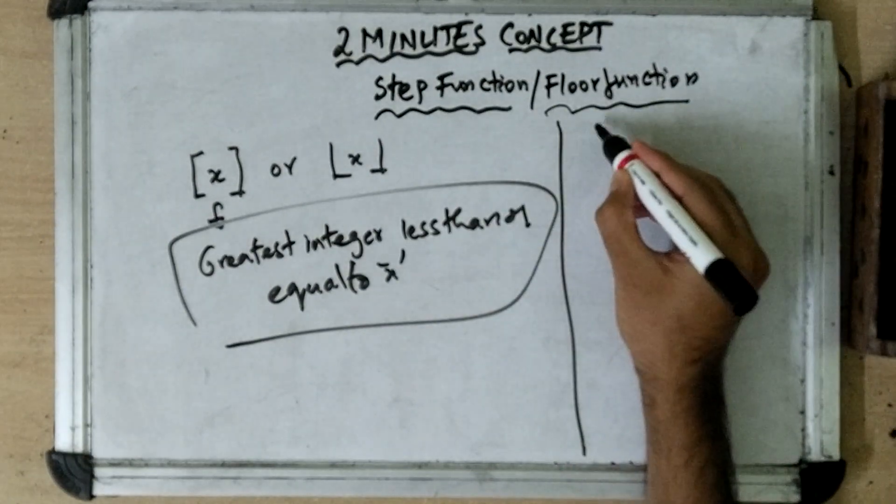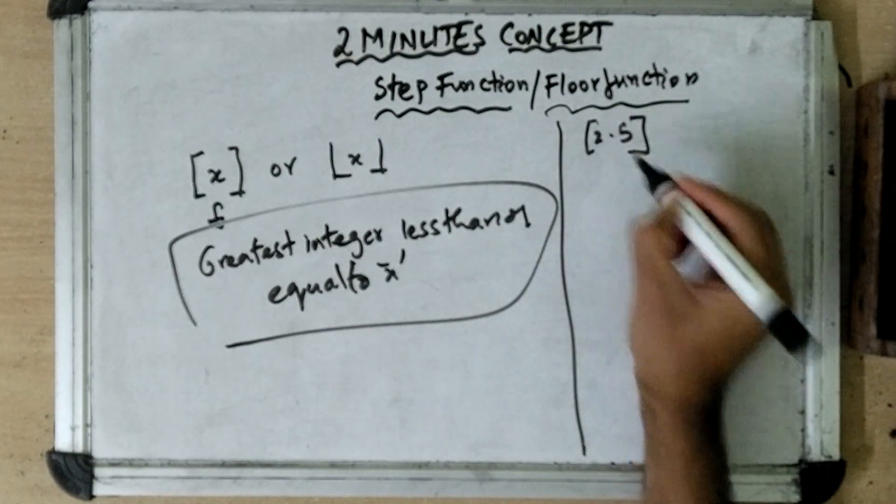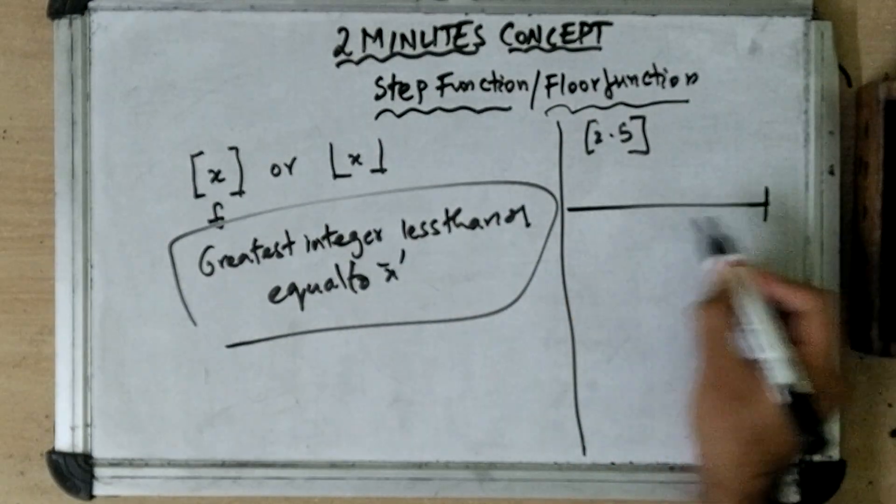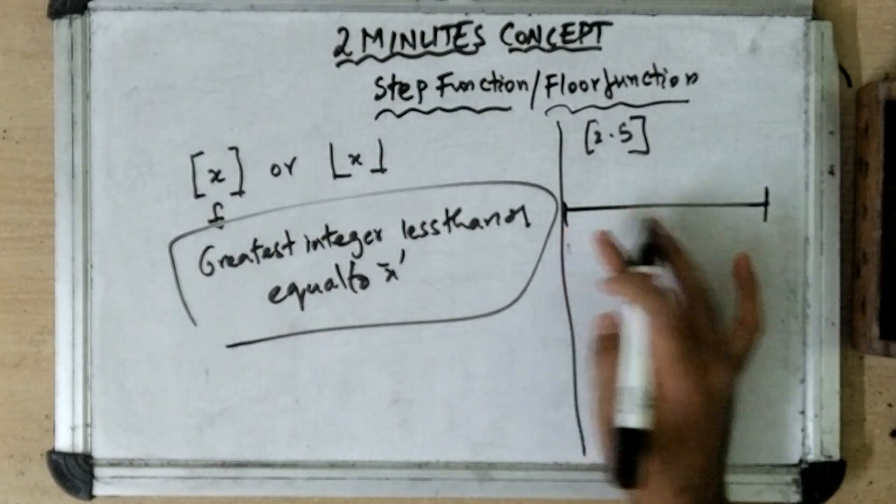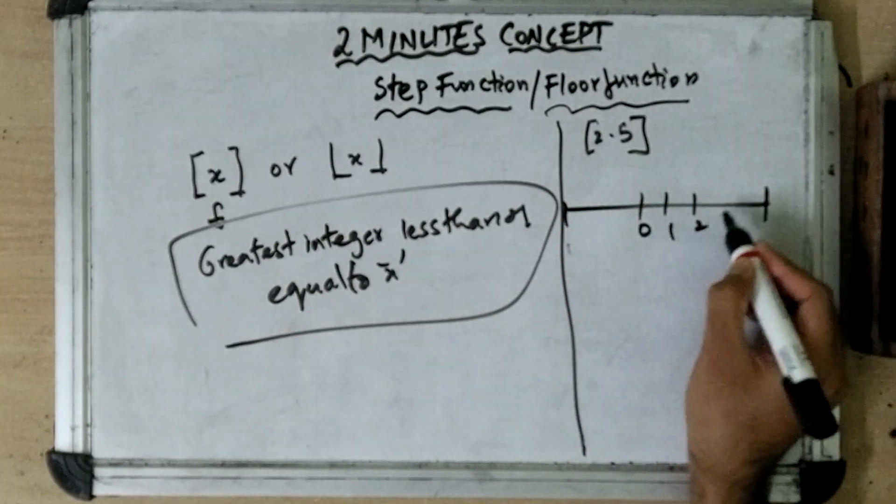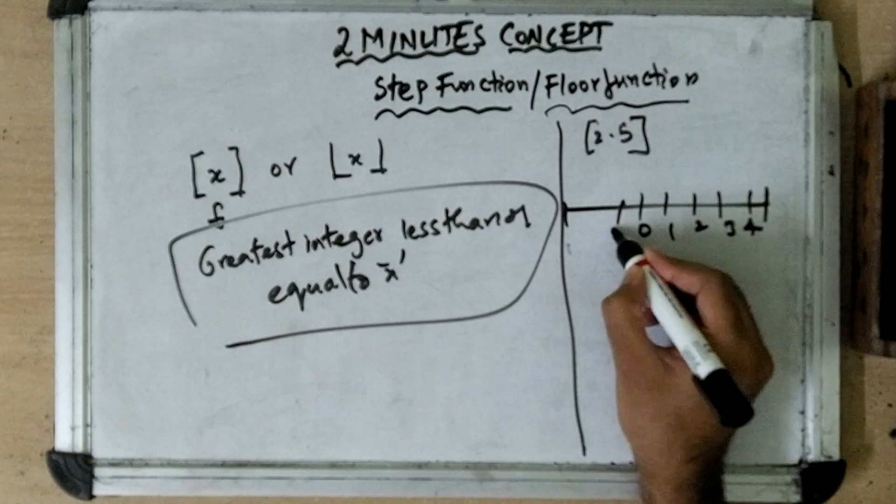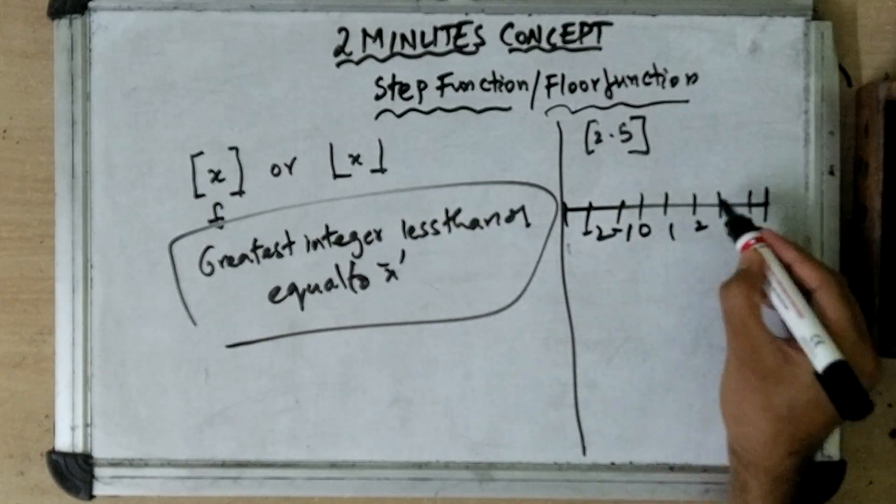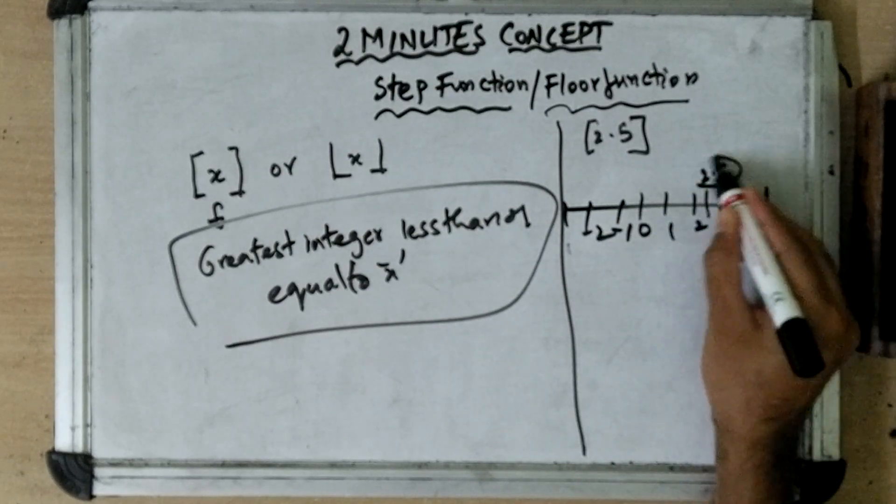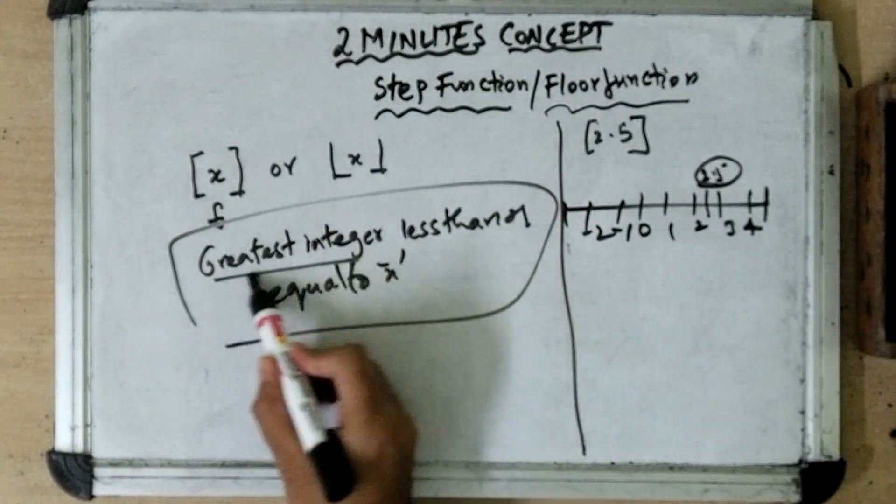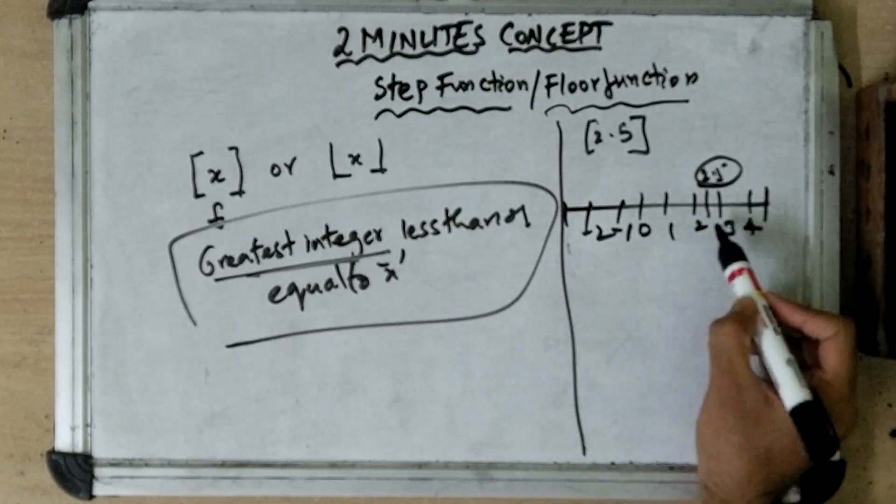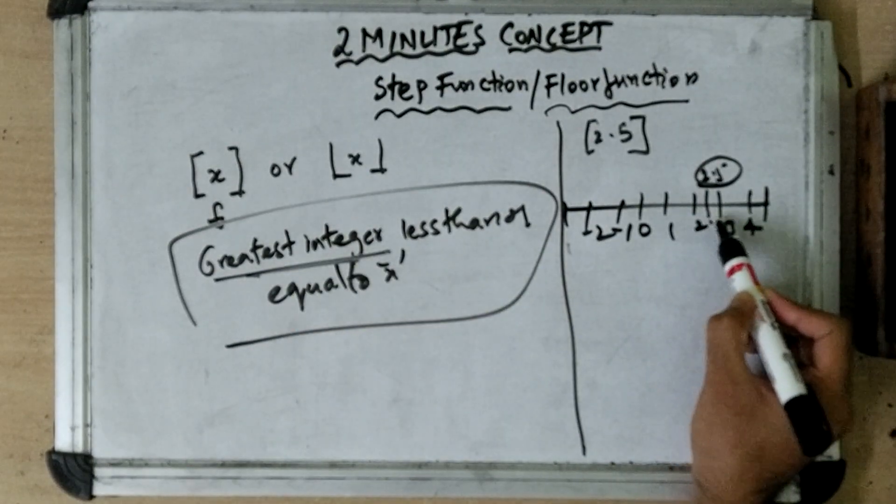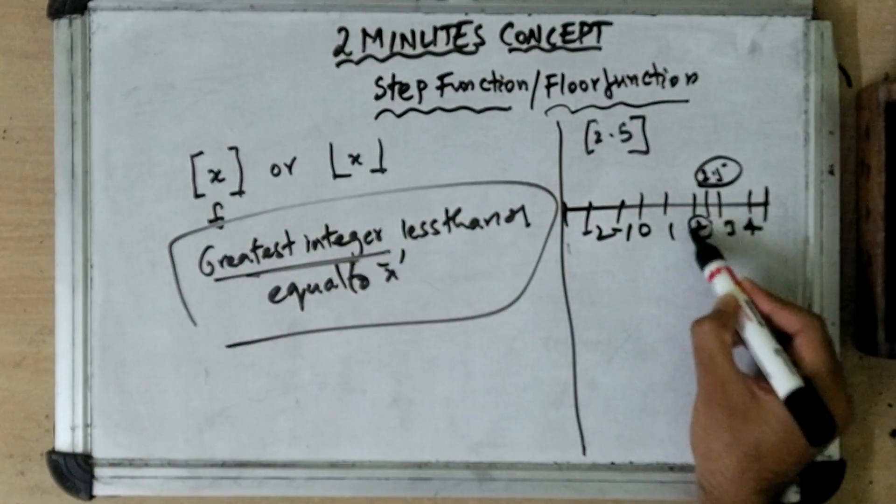Let us discuss it in detail. Suppose you have step of 2.5. If we draw a number line: 0, 1, 2, 3, 4, minus 1, minus 2, and so on. 2.5 will lie somewhere here. The greatest integer less than or equal to - what are all the integers which are less than 2.5?